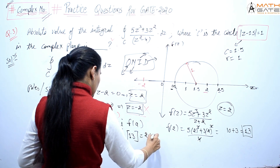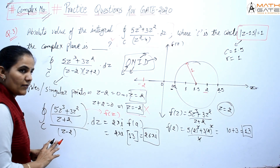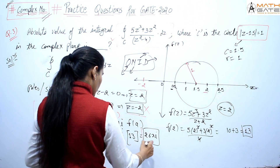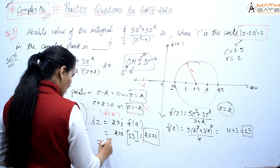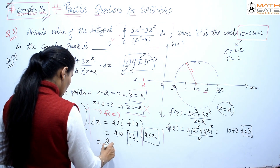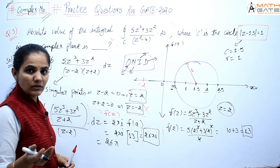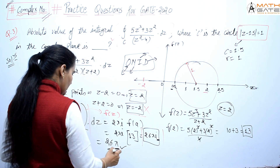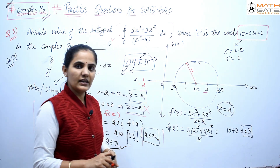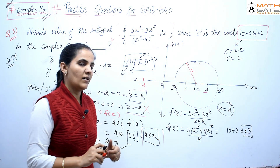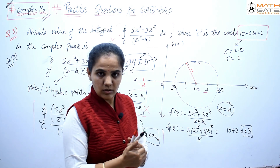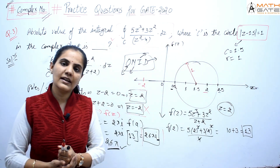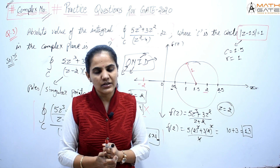Now we need the absolute value (modulus) of 26πi. The modulus of 26πi is 26π, since |i| = 1 and the imaginary unit drops out. So the answer to this question is 26π. That's Cauchy's integral theorem applied. Next we'll discuss residue questions.